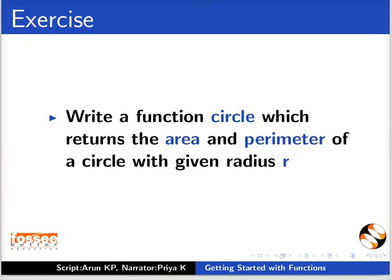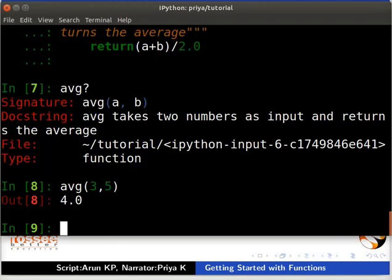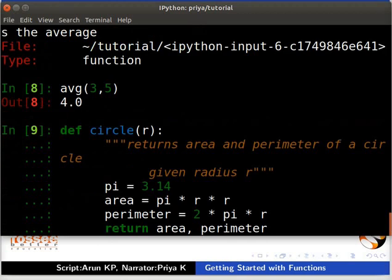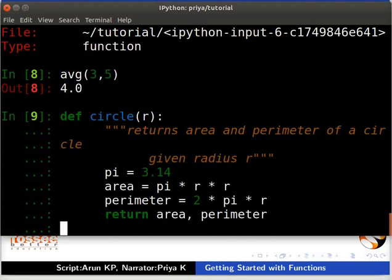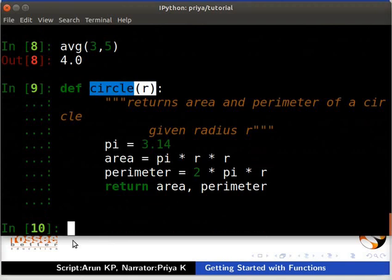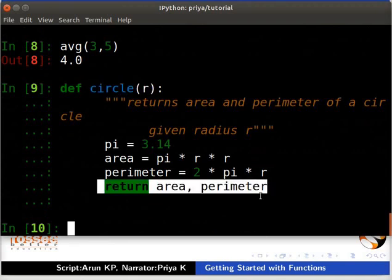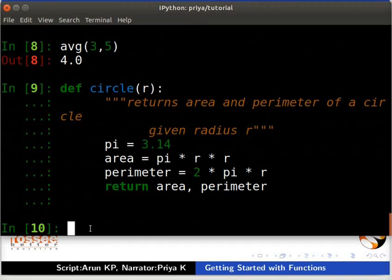Switch back to the terminal for the solution. Type the code as shown. Press the ENTER key two times. The circle function requires us to return two values. A Python function can return any number of values in the form of a tuple.